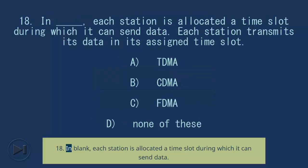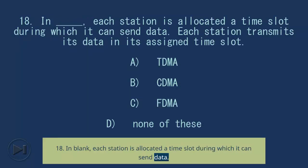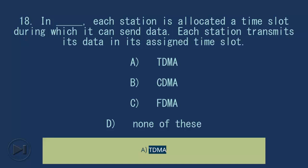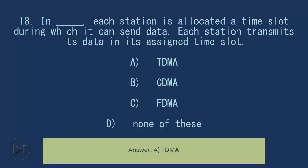Question 18: In blank, each station is allocated a time slot during which it can send data, and each station transmits its data in its assigned time slot. A) TDMA, B) CDMA, C) FDMA, D) None of these. Answer: A) TDMA.